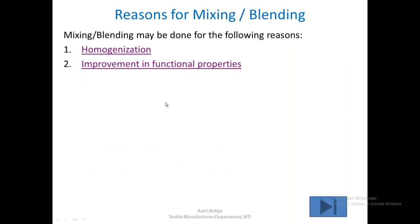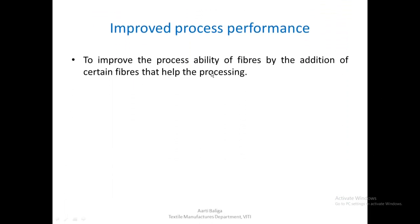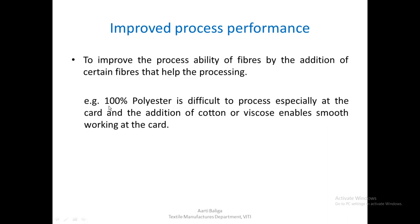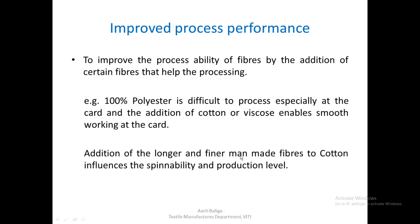We have seen the first two reasons — homogenization and improvement in functional properties. The third reason is improved process performance: to improve the processability of fibers by adding certain fibers that help the processing. For example, 100% polyester is difficult to process, especially at the card, and the addition of cotton or viscose enables smooth working. Also, the addition of longer and finer manmade fibers to cotton influences spinnability and production levels.